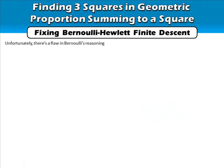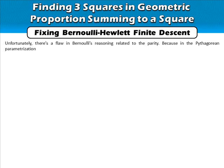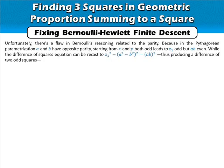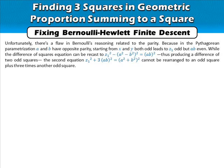Unfortunately there is a flaw in Bernoulli's reasoning related to parity: on the Pythagorean parametrization, a and b have opposite parity. Starting from x and y both odd leads to z₁ odd but ab even. While the difference-of-squares equation can be recast to produce a difference of two odd squares, the second equation z₁² + 3(ab)² = (a² + b²)² cannot be rearranged to an odd square plus 3 times another odd square. Hence the descent fails to reproduce the original conditions.